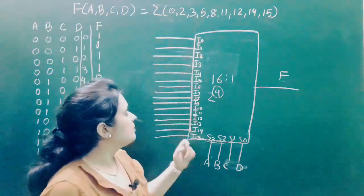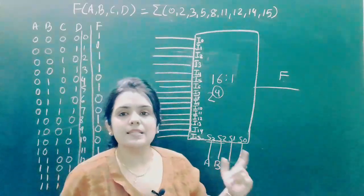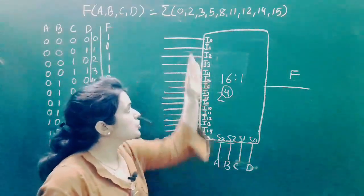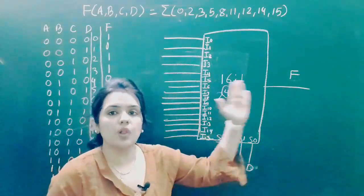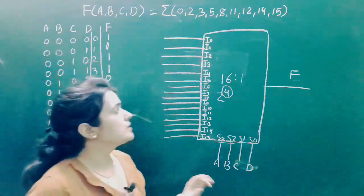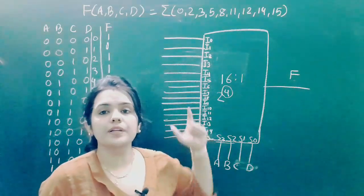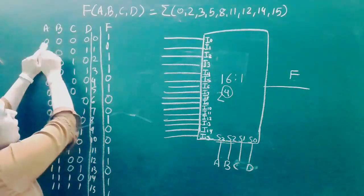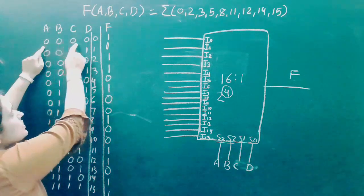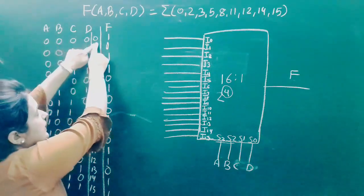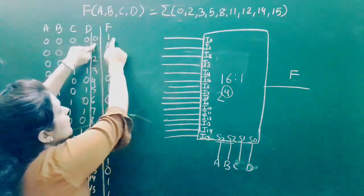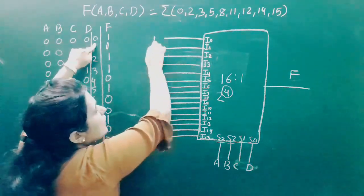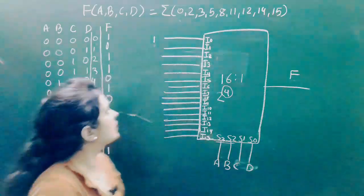This is the 16-to-1 multiplexer. A, B, C, D are the selection lines, which decide which input line is selected for output. We need to determine what data to provide to each input line. When A, B, C, D = 0, 0, 0, 0, I0 is selected. We want F = 1 here, so we connect logic 1 to I0.